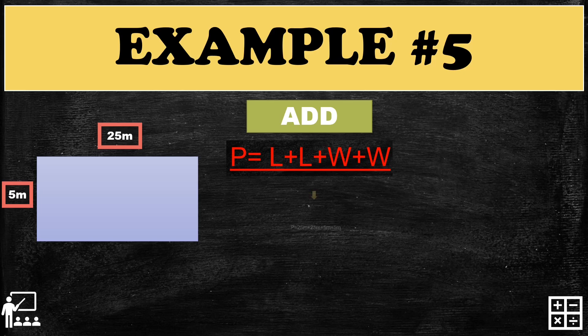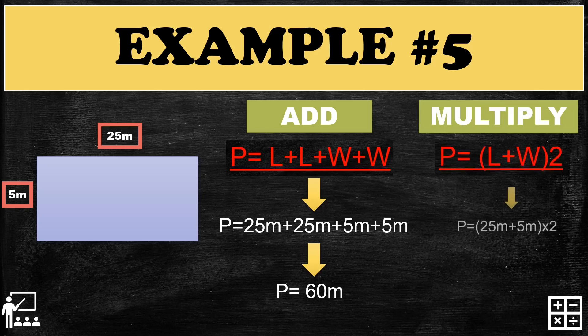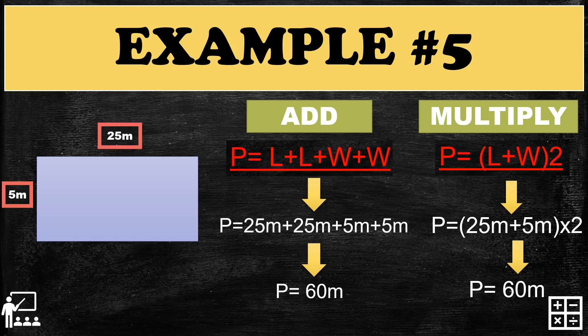Can you guess the answer for this example? Just add 25 + 25 + 5 + 5 — that gives you 60 meters. So the perimeter of this rectangle is 60 meters. For the multiply method: 25 + 5 = 30, then 30 × 2 also gives you 60 meters.